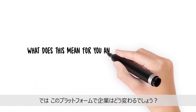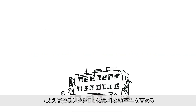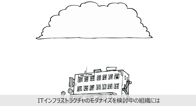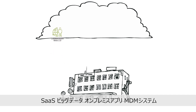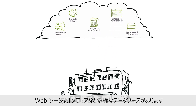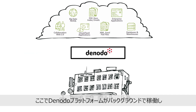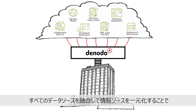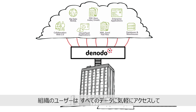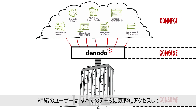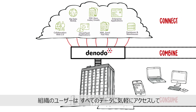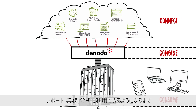What does this mean for you and your organisation? Let's say your organisation wants to modernise your IT infrastructure to make it more agile and efficient by moving to the cloud. Most probably you have multiple data sources in SaaS Cloud, big data clusters, on-premise enterprise apps, MDM systems, web and social media. Denodo Platform will work in the background to virtually combine all your data sources to create a single source of truth and enable your users to access any data for reporting, operational and analytical purposes without worrying about the underlying complexity.